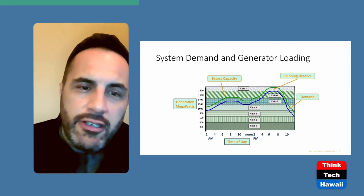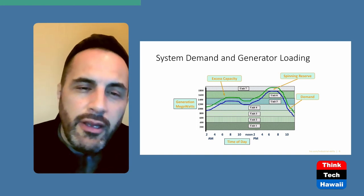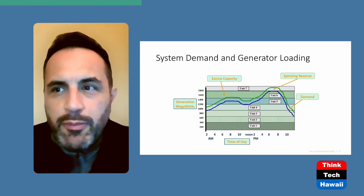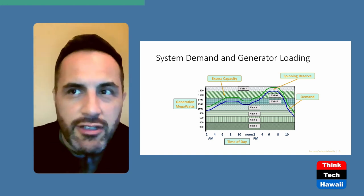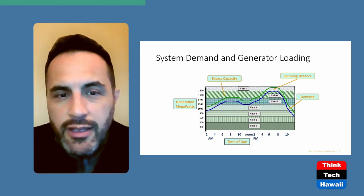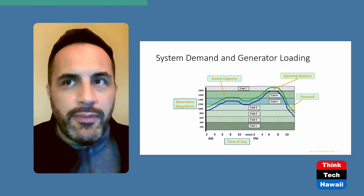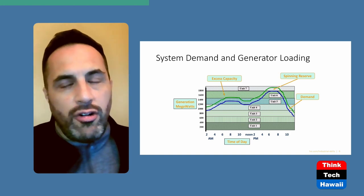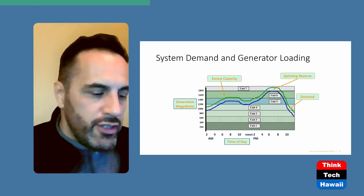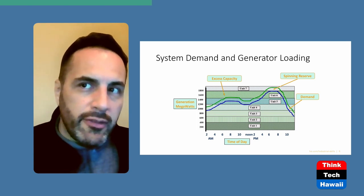Units one and two are inexpensive to run once running, but very expensive to shut down and start up again. The further up you go to units three, four, five, and six, the more expensive they are to run, but they're quicker to start and shut off. Everything has a startup and shutdown cost. Units one and two have very expensive startup/shutdown costs but very inexpensive running costs, which is why they're kept running all the time — these are known as base load units. If you're forced to shut these down because of excess renewable generation, you incur significant costs in maintenance, fuel, and emissions, and you also lose a lot of system inertia.